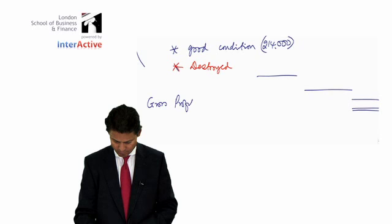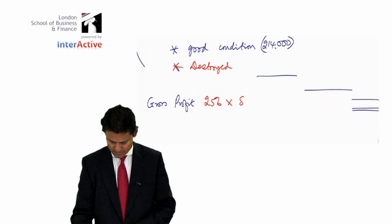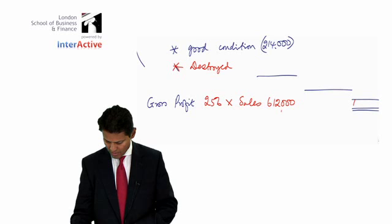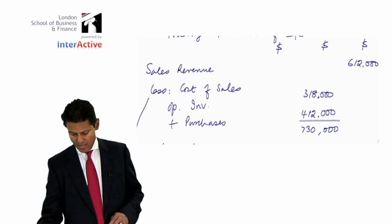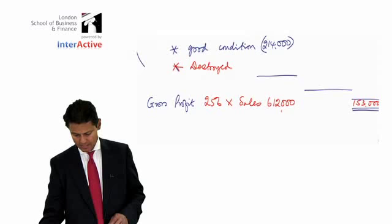So if you take your 25% of sales, sales £612,000, that figure is £153,000. And if that's £153,000 and your sales are £612,000, £612,000 take away £153,000 is—you can do that in your calculator—£459,000.